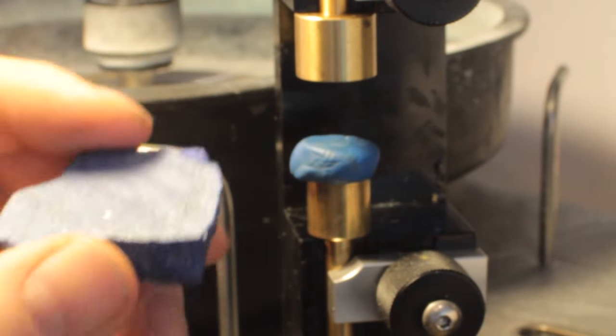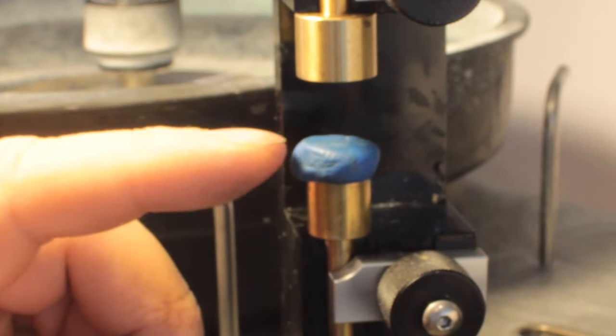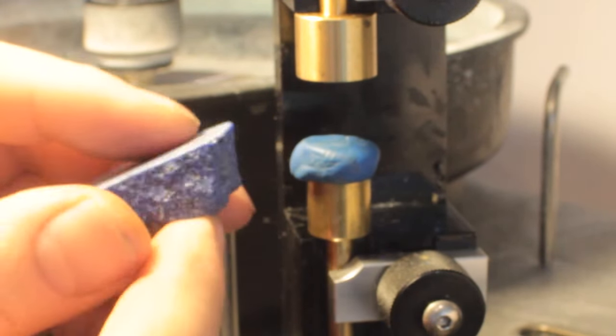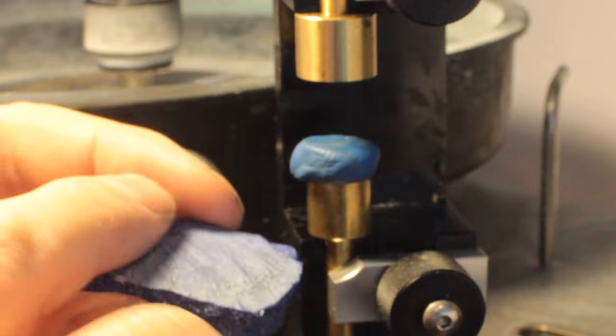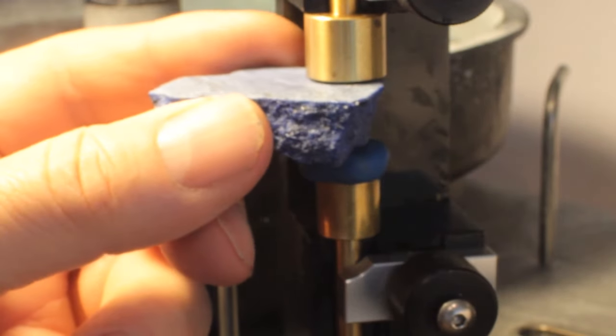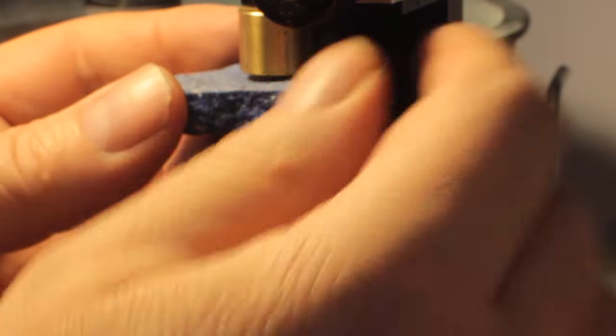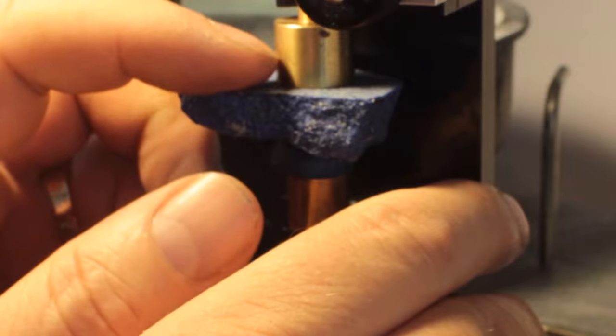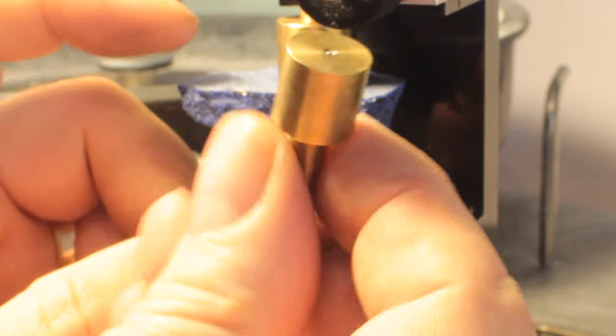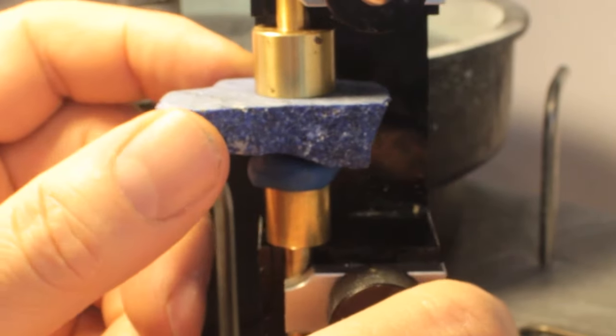For our lapis lazuli to put it into our transfer jig, I put a dop in the bottom. I put a piece of modeling clay here that'll help form to the bottom side of the stone, which is not flat, and help us make the top part, which is flat, line up with the dop. Using a larger dop at this point helps me center the stone to get it where I want it.